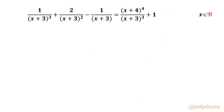Welcome back to Infigyan friends. In this video we are going to take up one very interesting and challenging rational equation. The given equation is 1 over (x+3)³ plus 2 over (x+3)² minus 1 over (x+3) equals (x+4)⁴ over (x+3)³ plus 1. We have to find out the real solutions.